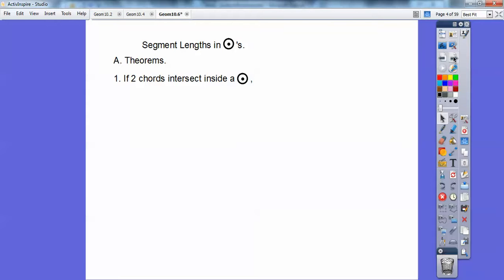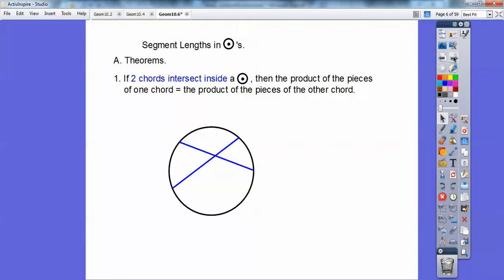So let's start off with some theorems here. If two chords intersect inside a circle, so here's a picture of two chords intersecting inside of a circle. Then the product of the pieces of one chord equals the product of the pieces of the other chord. So let's just put some letters in for these lengths here. So I've got A, B, C, and D. Then, I always say piece times piece equals piece times piece. So A times B equals C times D.